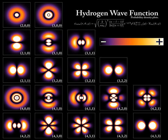Quantum mechanics has had enormous success in explaining many of the features of our universe. Quantum mechanics is often the only theory that can reveal the individual behaviors of the subatomic particles that make up all forms of matter—electrons, protons, neutrons, photons, and others. Quantum mechanics has strongly influenced string theories, candidates for a theory of everything. It is also critically important for understanding how individual atoms are joined by covalent bond to form molecules. The application of quantum mechanics to chemistry is known as quantum chemistry, and quantum mechanics can also provide quantitative insight into ionic and covalent bonding processes.